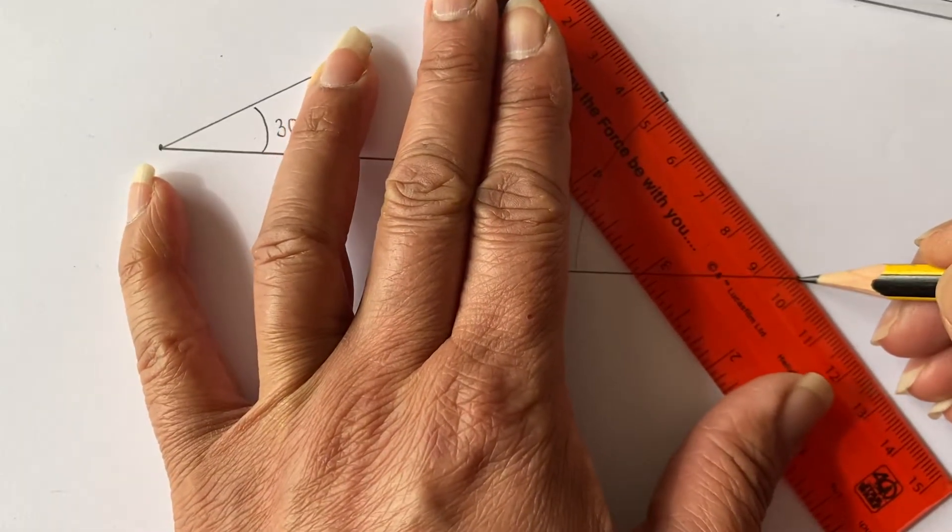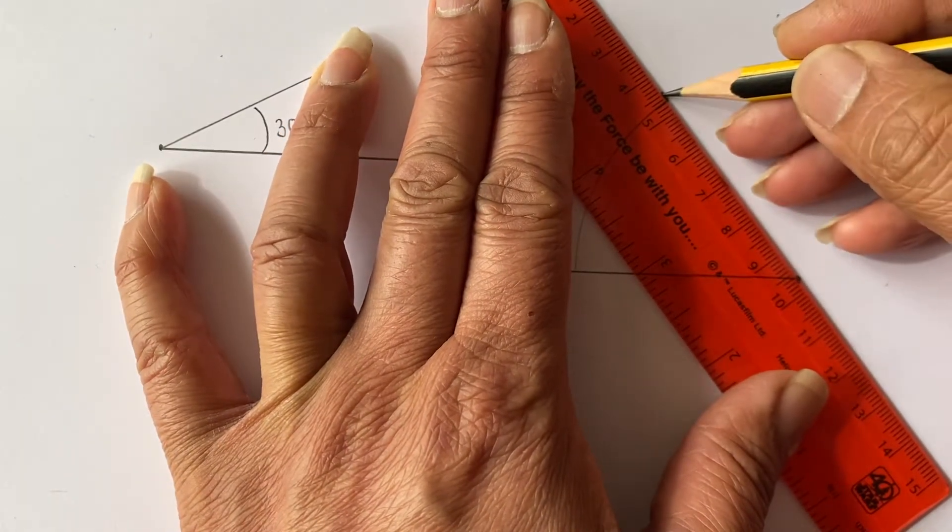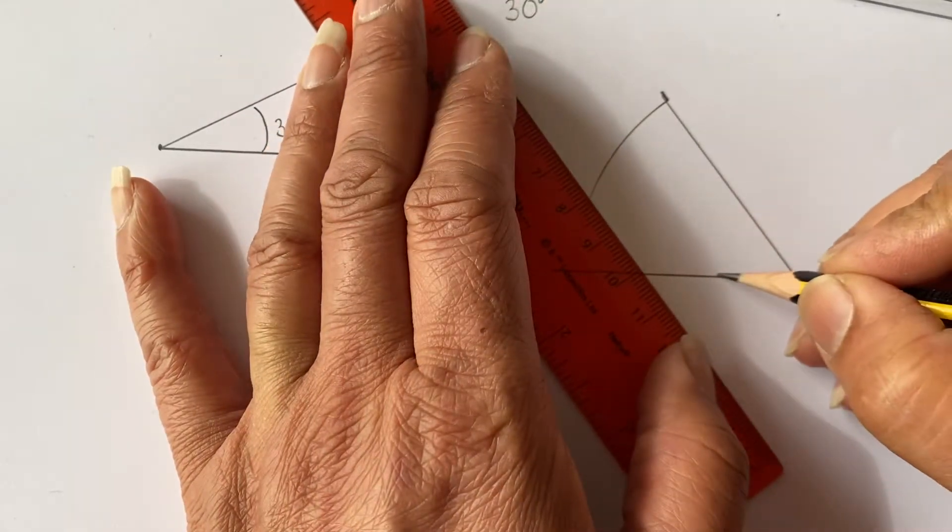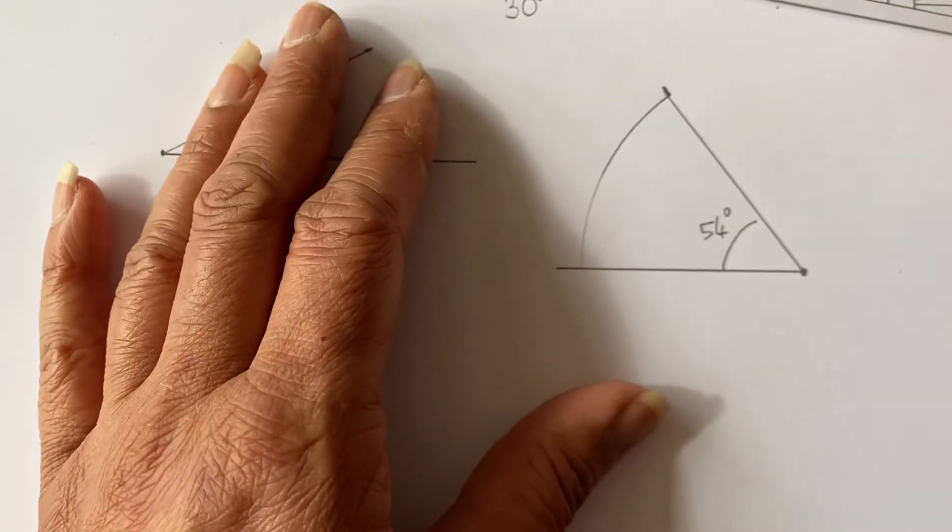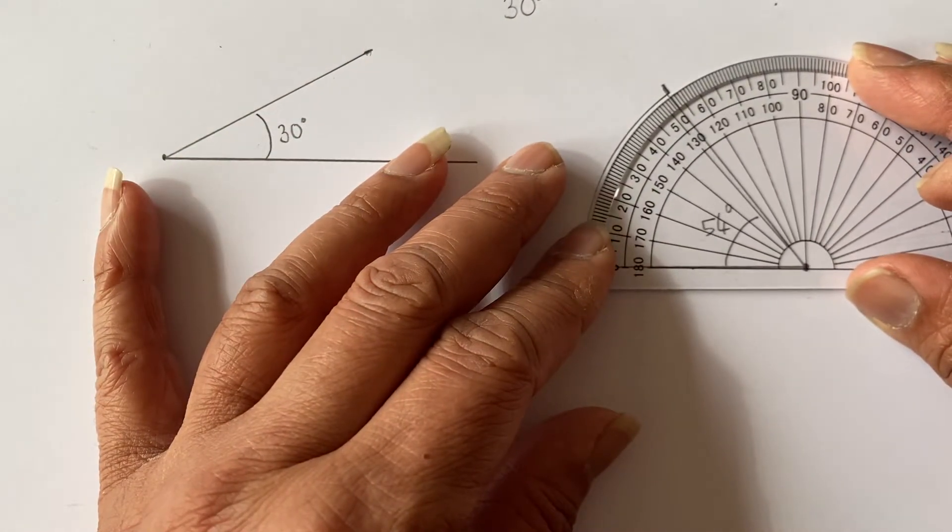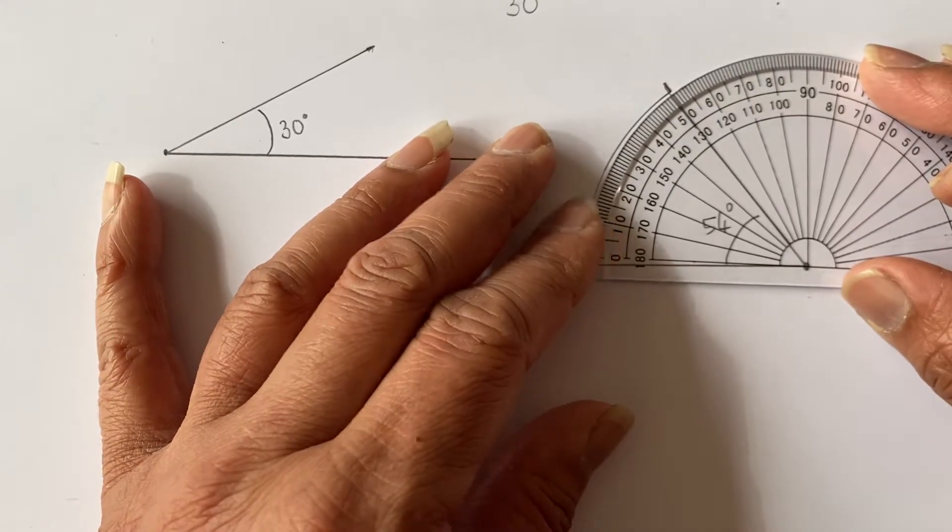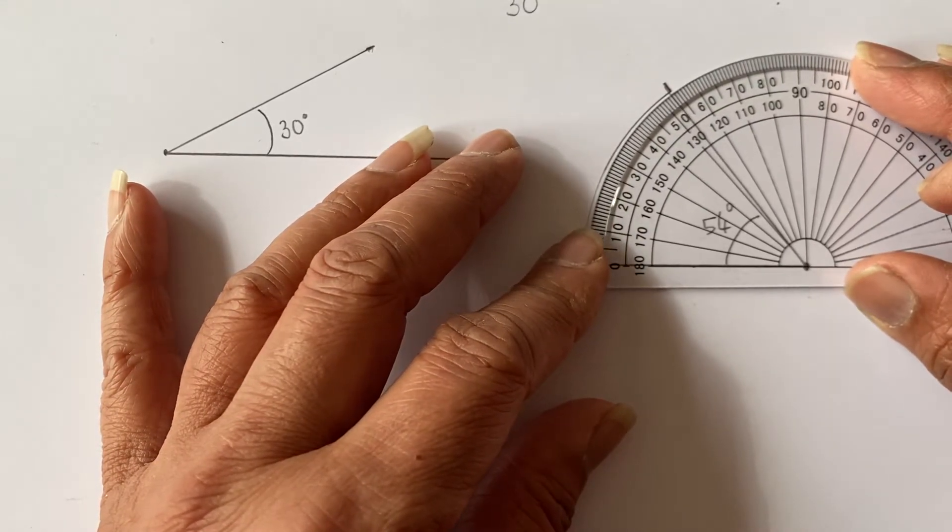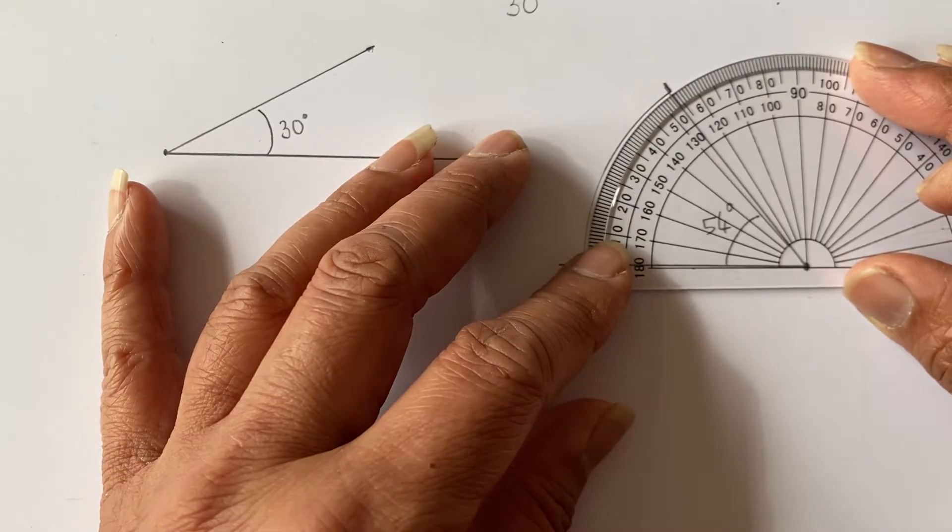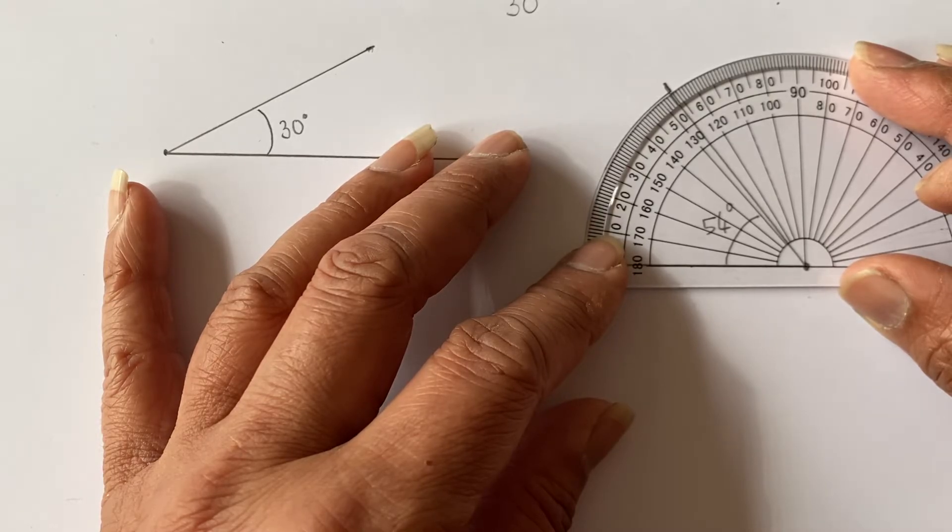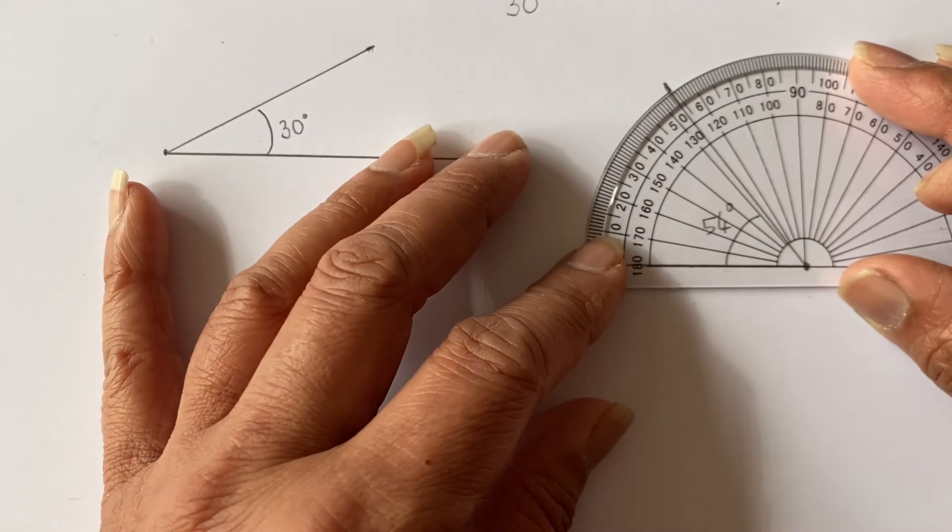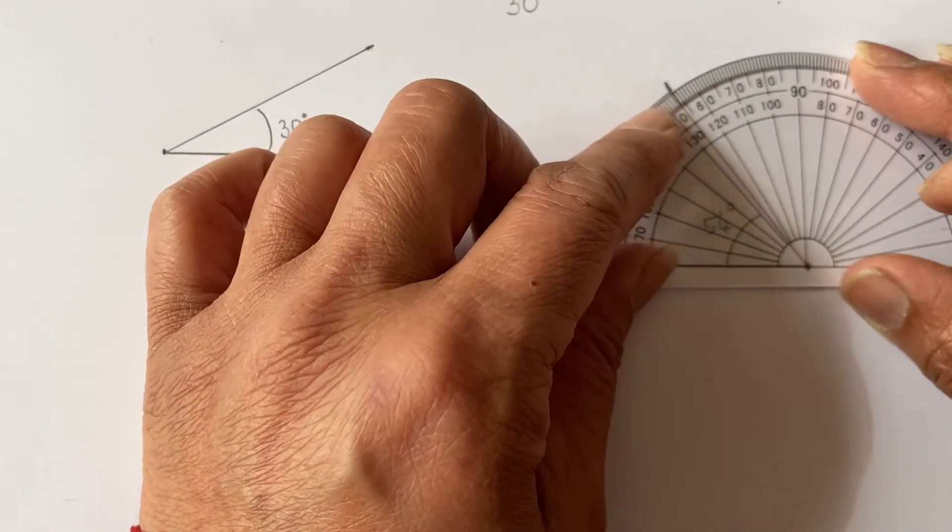And we can now label it 54 degrees. And I just want to check, just to make sure that it is right. So I'm going to sit this here. Check 54. Make sure it's on the zero. Sit it on the line nicely. And yes, there we go. 54 it is. Excellent. So from zero to 54.